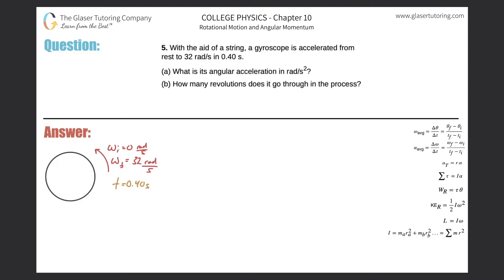Number five: With the aid of a string, a gyroscope is accelerated from rest to 32 radians per second in 0.4 seconds. What is the angular acceleration in radians per second squared? When dealing with rotational kinematics, get rid of the term angular and think about it in terms of linear kinematics.